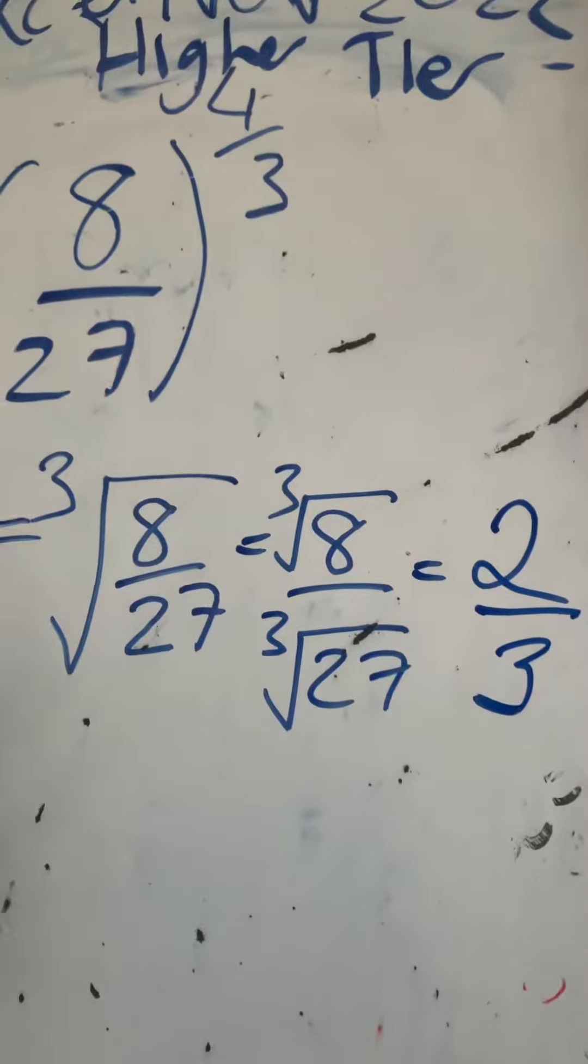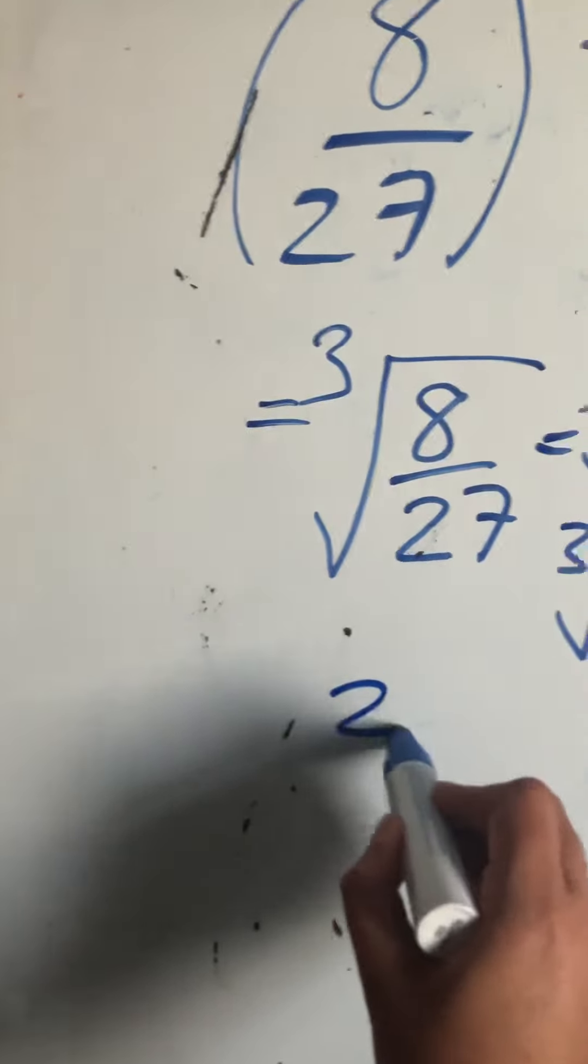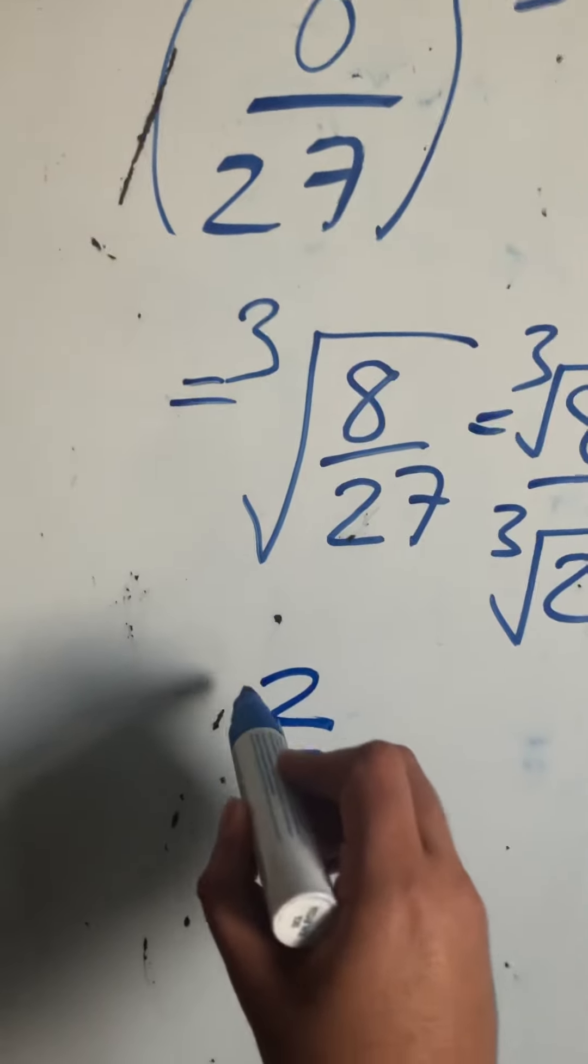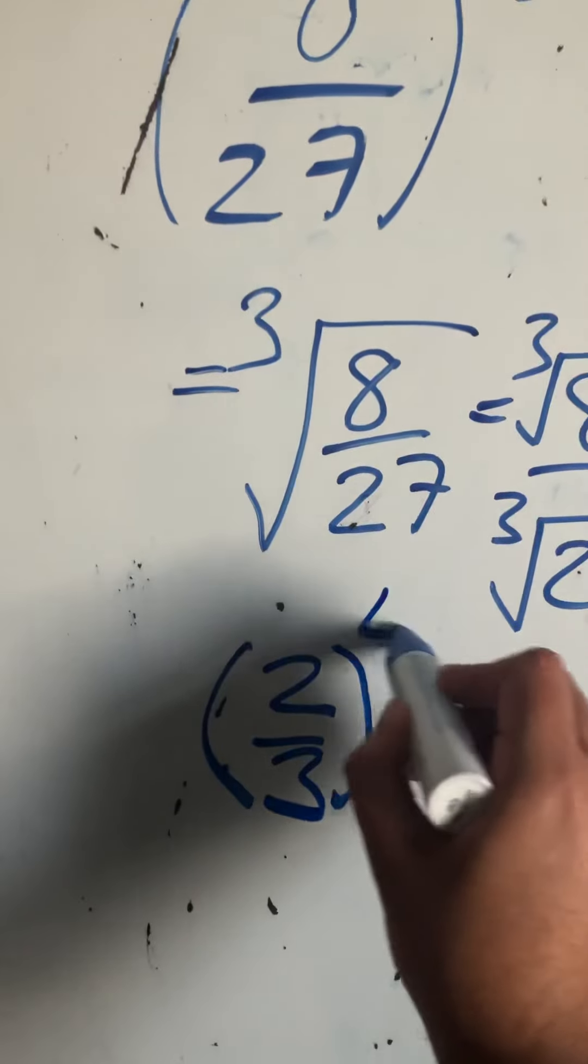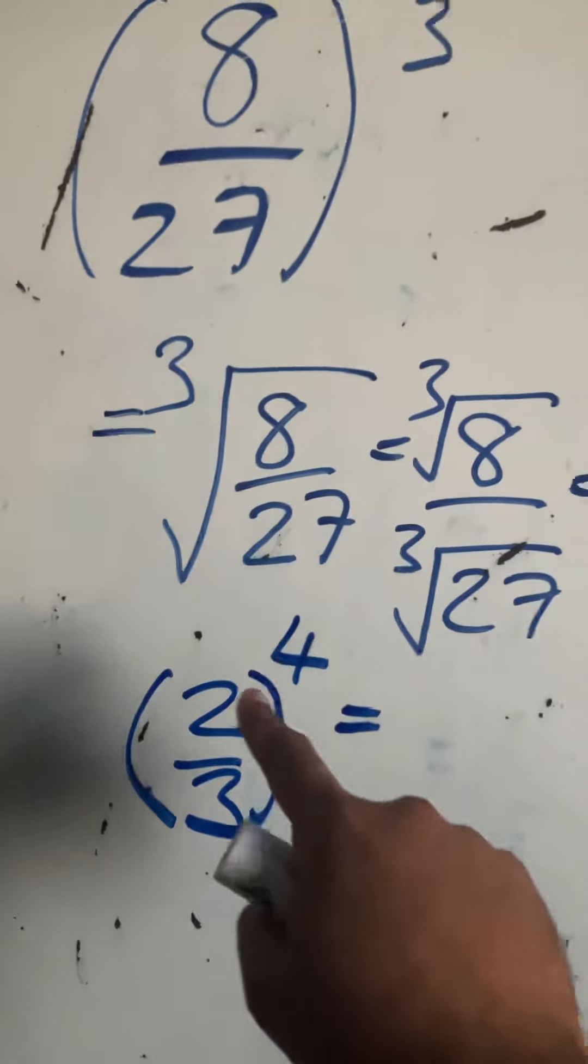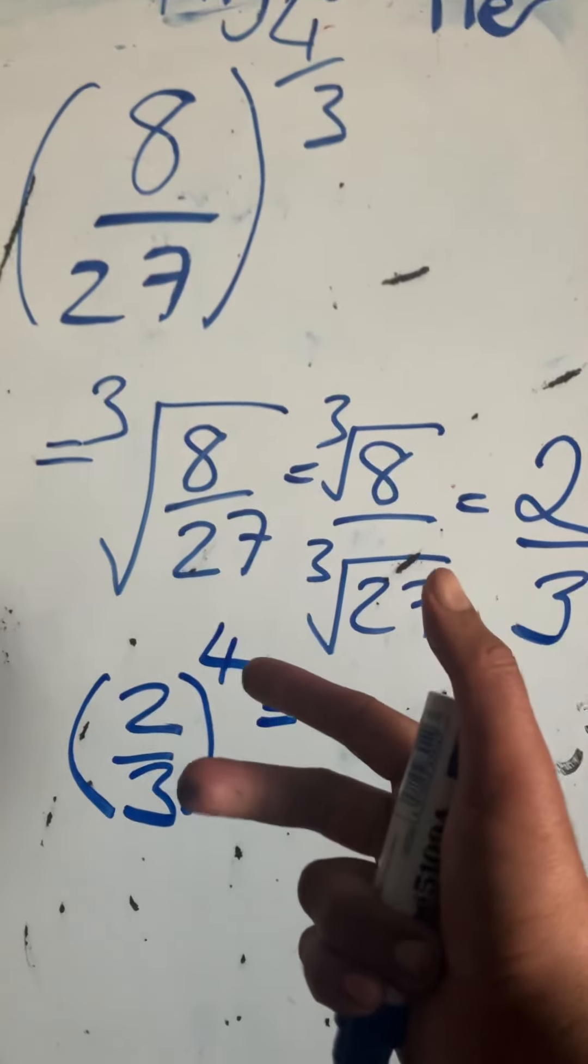I'm now going to raise that fraction to the power of the numerator, so raise it to the power of 4. So I have 2 to the power of 4, which is 2×2×2×2 = 16.